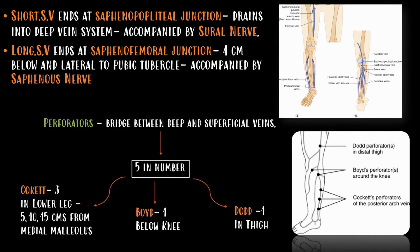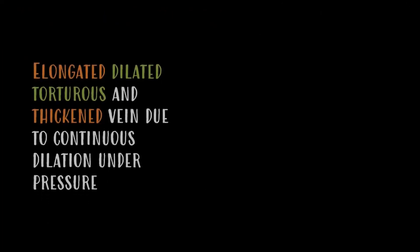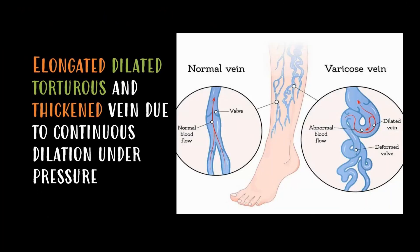This is the basic anatomy of the venous system in the lower limbs. Now let us see the definition of the varicose vein. A varicose vein is an elongated, dilated, tortuous, and thickened vein due to continuous dilation under pressure.